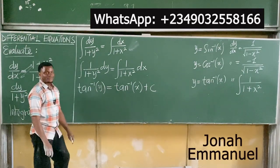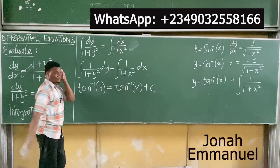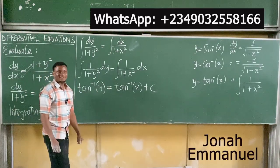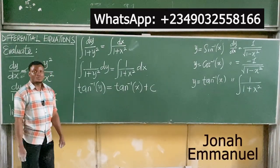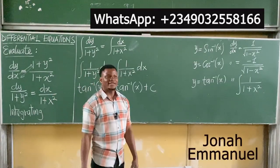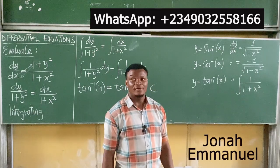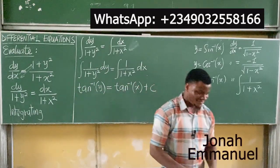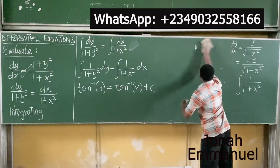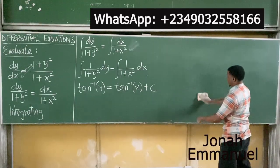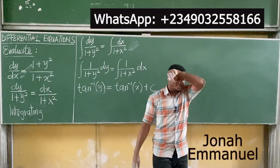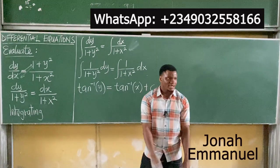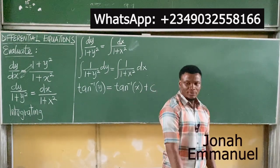How do we get y here? If I have tan inverse of y equal to tan inverse of x plus c, how do you get y? You guys have forgotten — if you have sin inverse, how do you cancel sin inverse? You multiply by sin to cancel it and get x. So if you have tan inverse, you multiply by tan to cancel it.